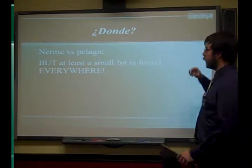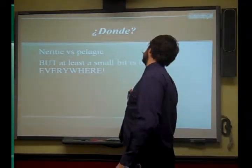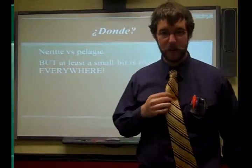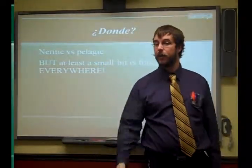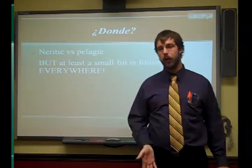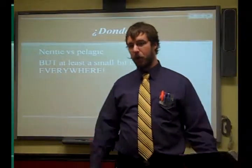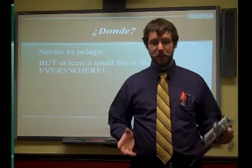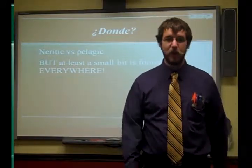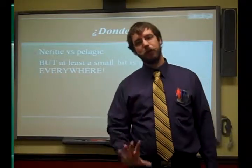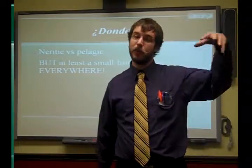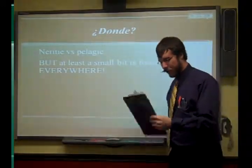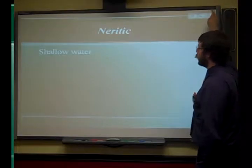Before we get too much farther, we need to talk about neritic versus pelagic. Keep in mind that you do find the small bits everywhere. Anything that's neritic is shallow water — technically a coastal region, inside your continental margin — that would be the neritic zone. Pelagic regions are deep under the ocean floor, in our deep ocean basin. So anything pelagic is found in the deep ocean basin; anything neritic — not neurotic, but neritic — is in the continental margin.